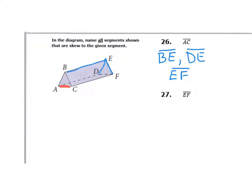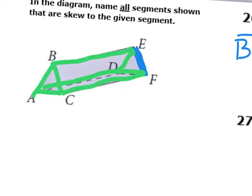The next problem does the same thing but with a different segment — this time segment EF. The first thing to erase is anything parallel. EF is sloping down to the right, so BC is parallel to it and gets erased.